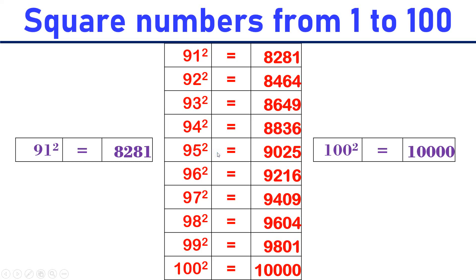95 square is equal to 9025. 96 square is equal to 9216. 97 square is equal to 9409. 98 square is equal to 9604. 99 square is equal to 9801. 100 square is equal to 10,000.